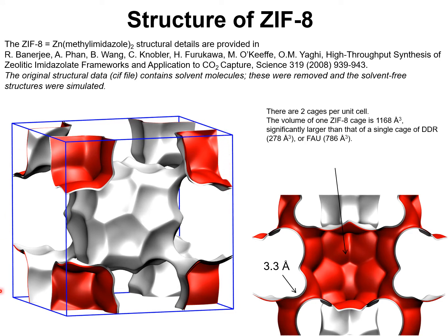This is the unit cell of ZIF-8. Each unit cell has two cages. The cage volume is 1,200 cubic angstroms. This is larger than that of DDR zeolite and even larger than that of fougerite. The cages are separated from one another by narrow windows of 3.3 angstroms.